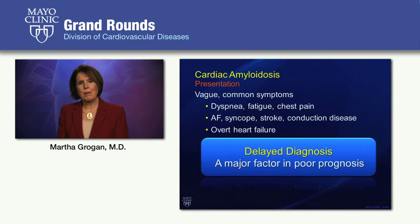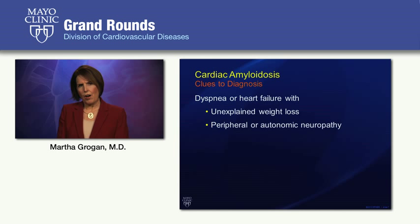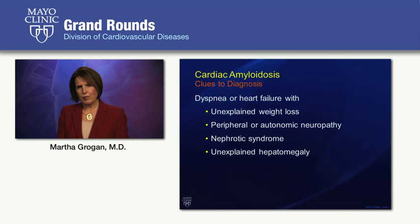Delayed diagnosis is a major factor in poor prognosis, and as cardiologists we need to try to make the diagnosis earlier. Clues that should cause you to think about cardiac amyloidosis include unexplained weight loss, peripheral or autonomic neuropathy, unexplained hepatomegaly, or nephrotic syndrome in a patient presenting with dyspnea or heart failure.